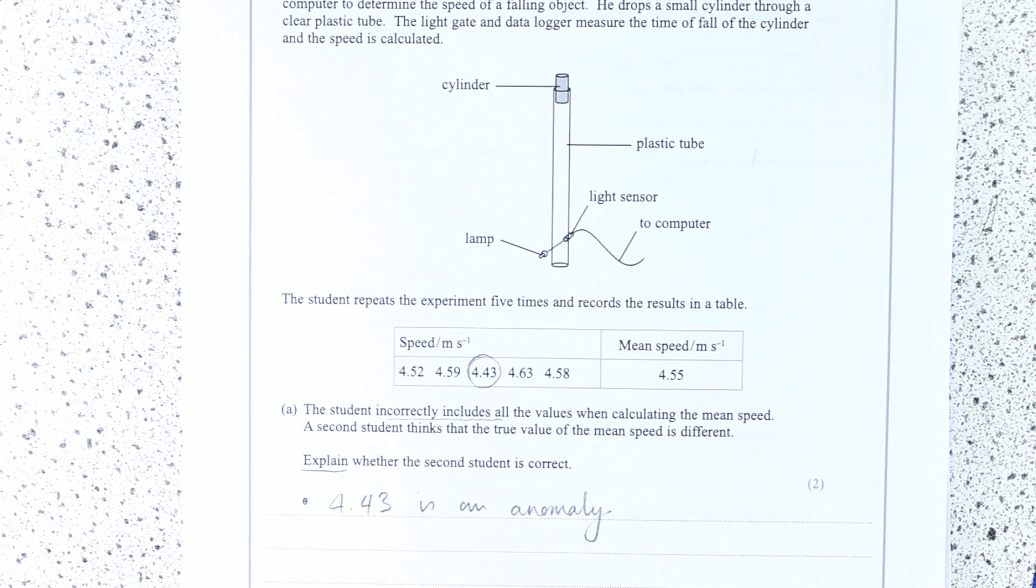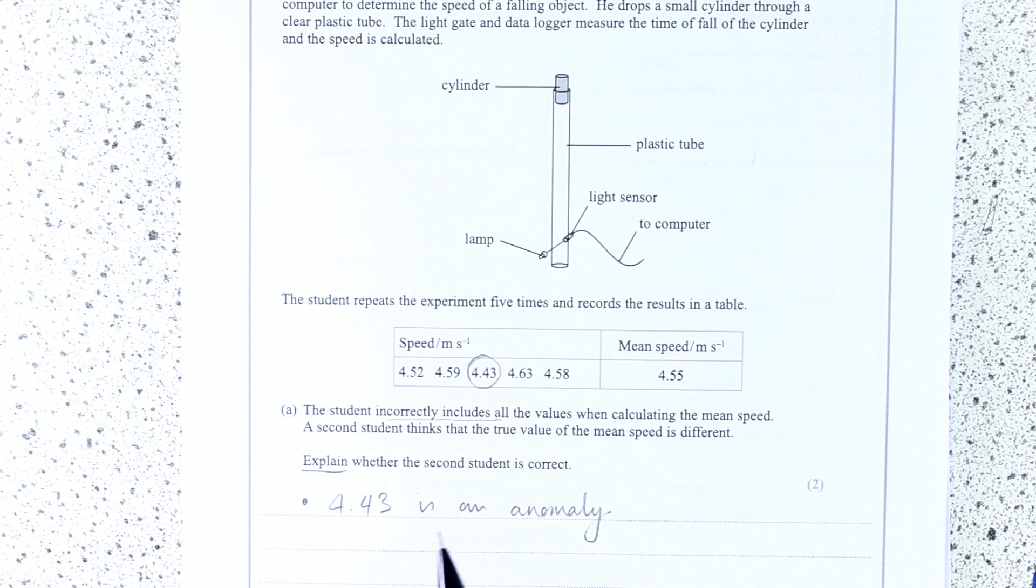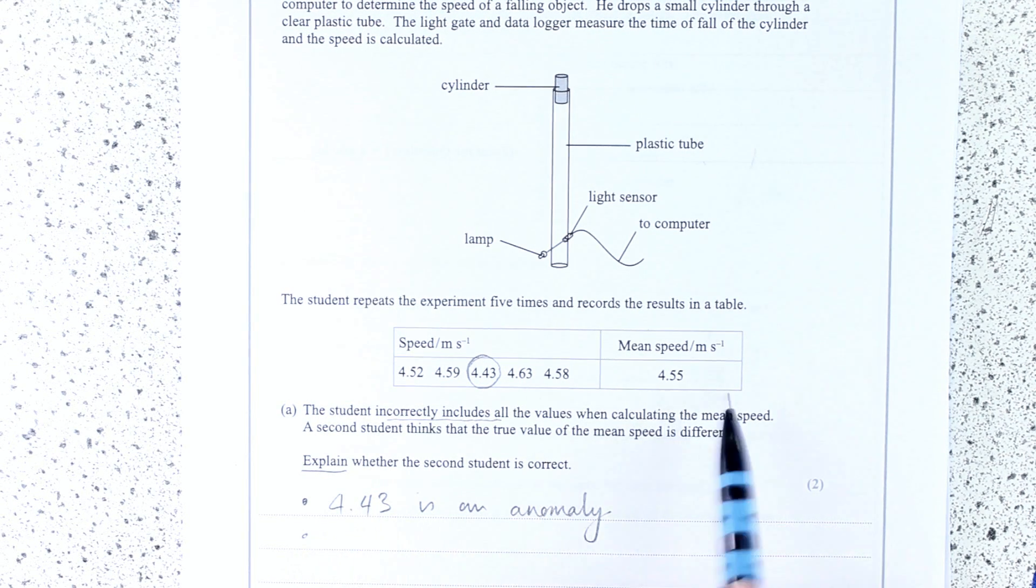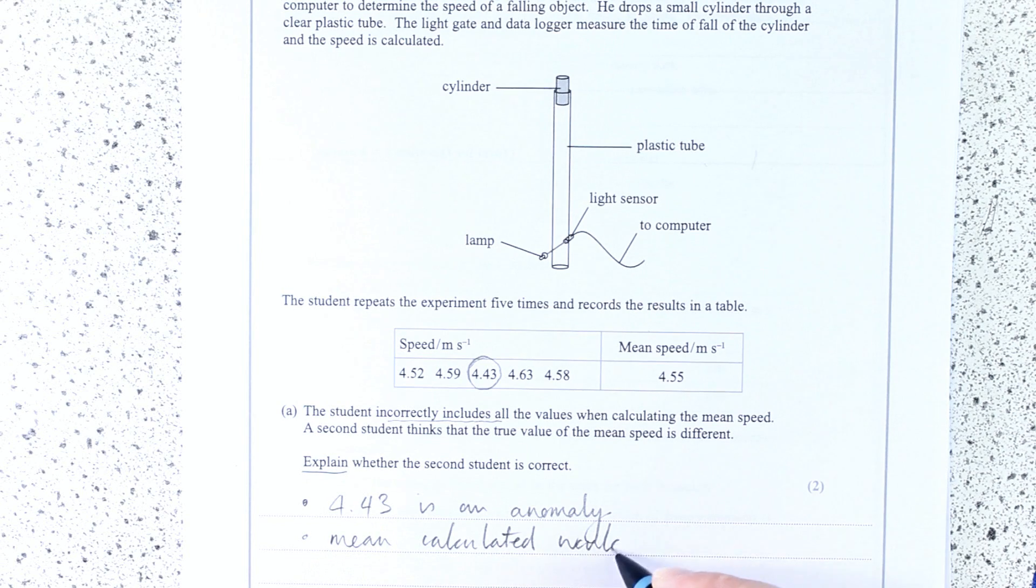What's the second mark here? Well, basically you're just saying that this therefore would be too low. So the mean calculated would be too low.